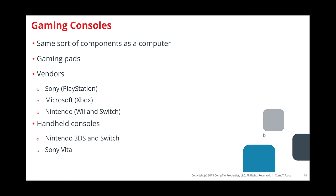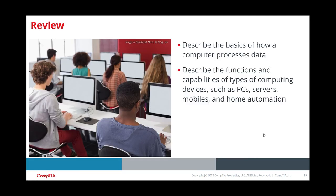Gaming consoles have the same components as an actual PC — a processor, a graphics processor, memory, and storage — just in a different form factor. They're specialized devices for processing gaming. Projects have put Linux on a PlayStation, but primarily they're made to play games — Sony, Xbox, and Nintendo Switch. Portable gaming includes the Nintendo Switch; the PS Vita is sadly dying. No matter what device, if you understand the basics — input, processing, storage, display — you can troubleshoot them all.